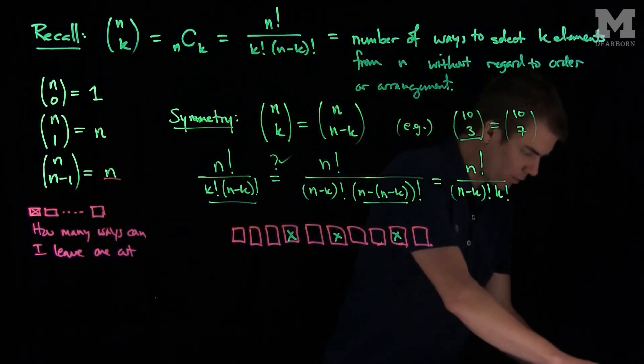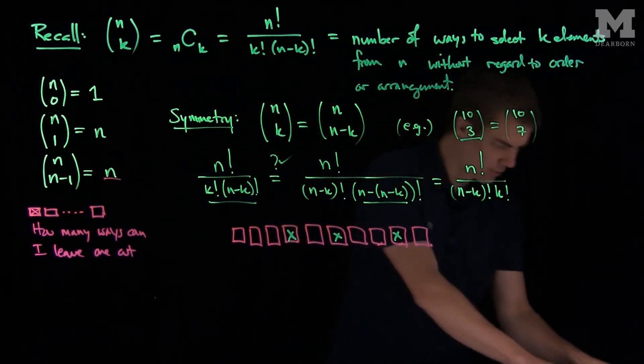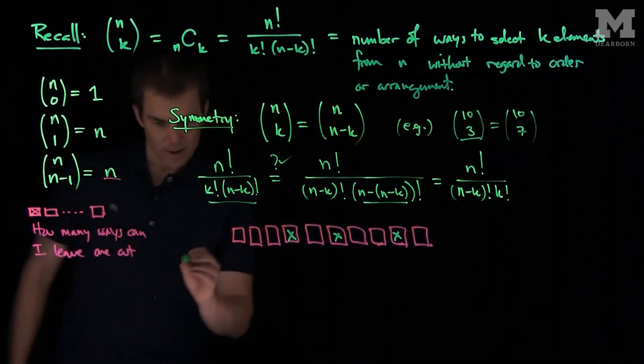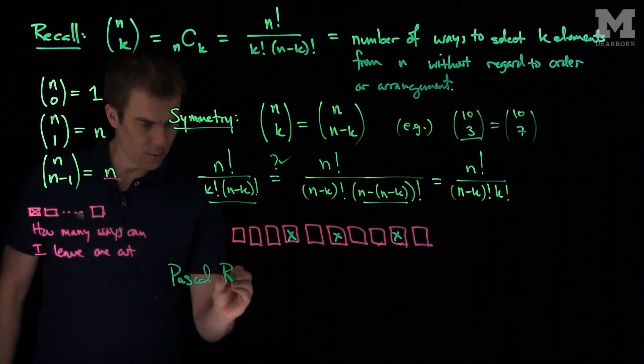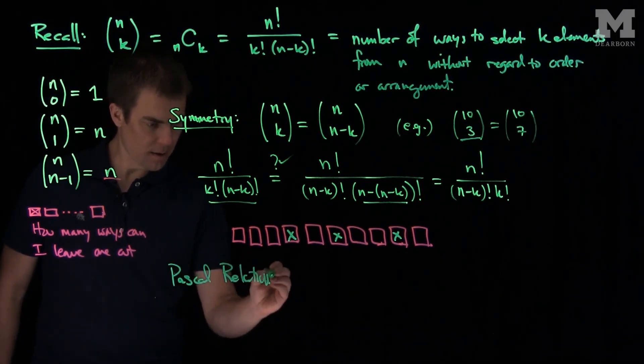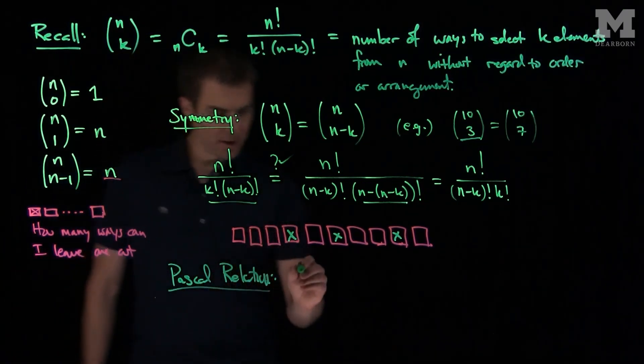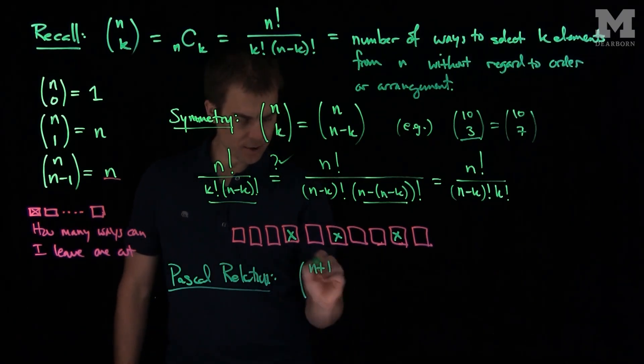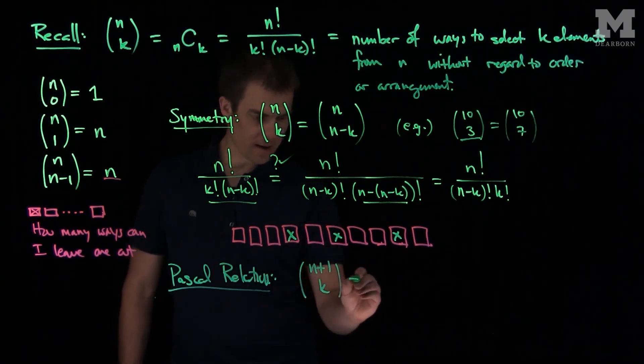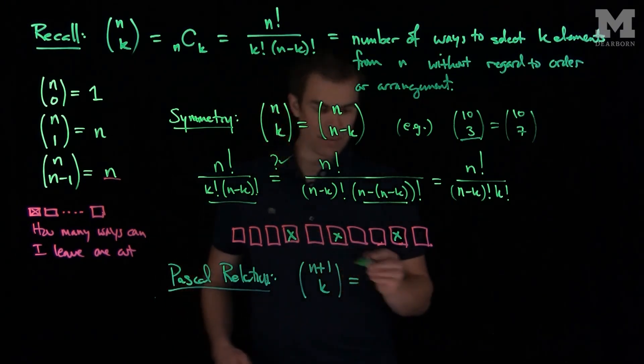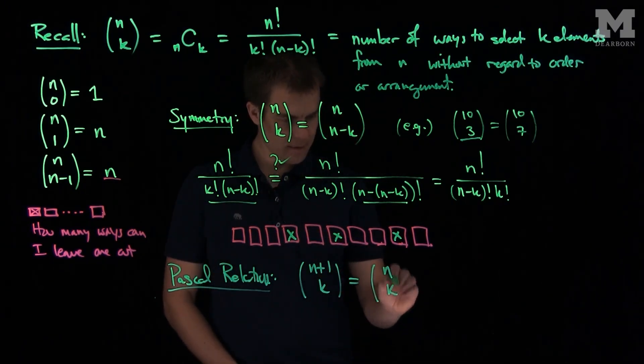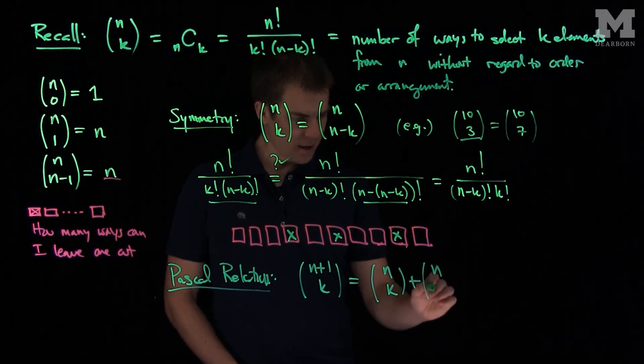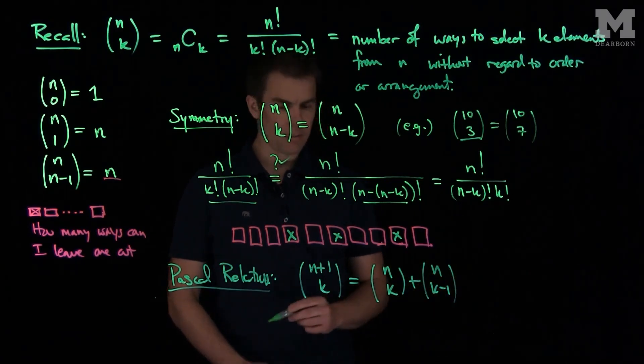Now, there's one other really important property, or symmetry property. This is the Pascal relation, and we'll talk more about Pascal in future videos. But what's the Pascal relation? The Pascal relation says that (n+1) choose k can be written as n choose k plus n choose (k-1).